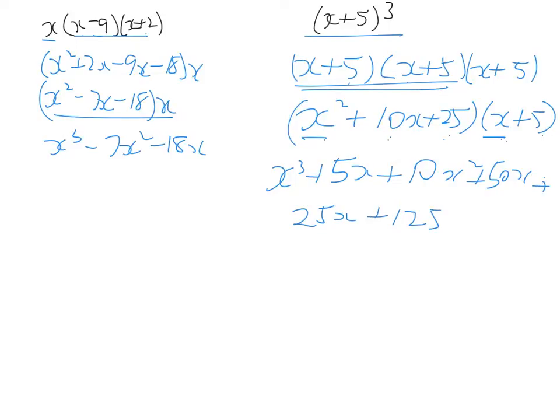And then, one last step, we simplify. x cubed, this should be 5x squared, so we've got 10x squared and 5x squared, so we make 15x squared. 50x and 25x makes 75x.